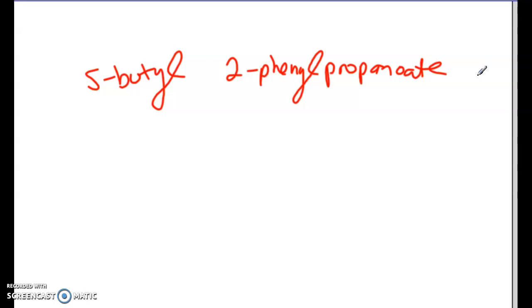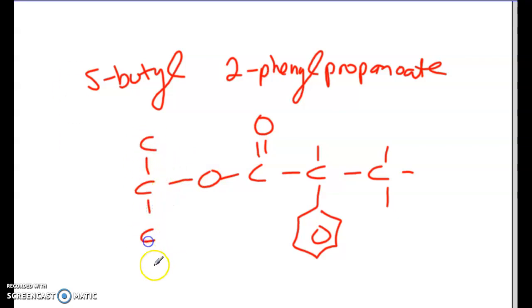Okay, so we should have here, so propanoate double bond O, on carbon two we have a benzene branch. So here is our parent portion, we have an oxygen so that we have an ester, and then we have S-butyl. So what that means is we have butyl but it's attached at carbon two. Okay, so those are, we looked at carboxylic acid and esters.